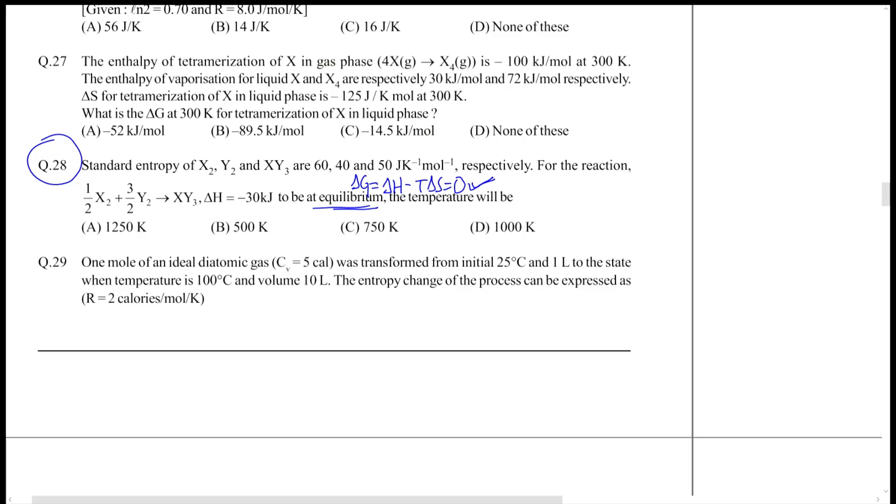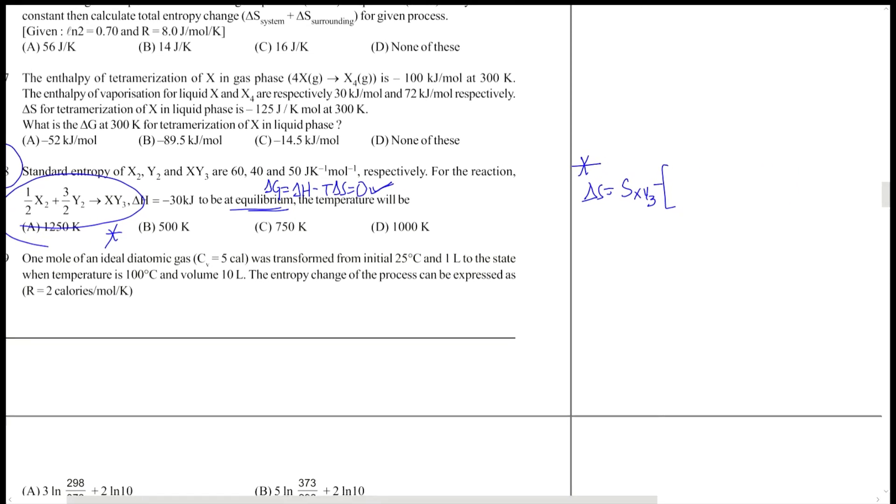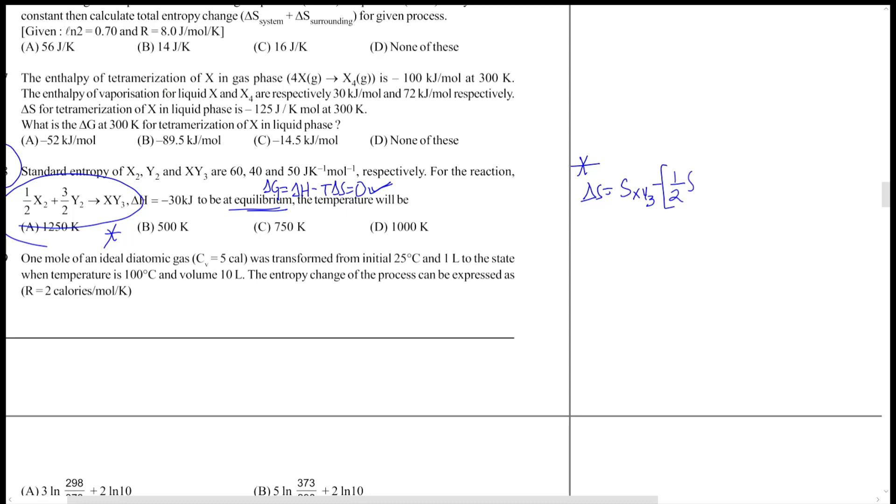The delta S equation for this reaction: you can write delta S as entropy of XY3 minus half into entropy of X2 and 3/2 into entropy of Y2.